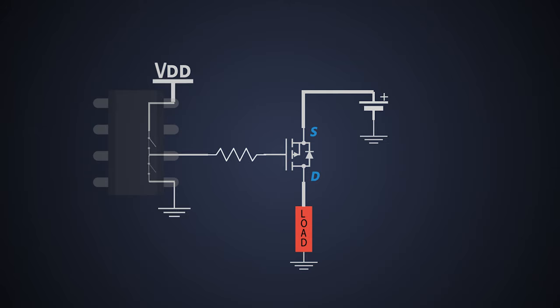The current never flows in the ground connection. Instead, the high charge and discharge current of the gate are conducted by the positive rail or we can say the supply voltage. Let's see how does this driving circuitry work.